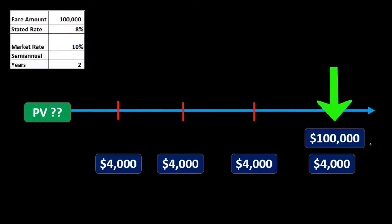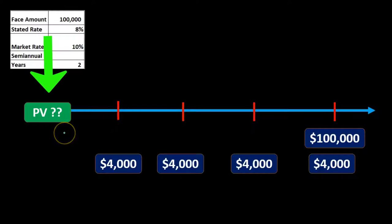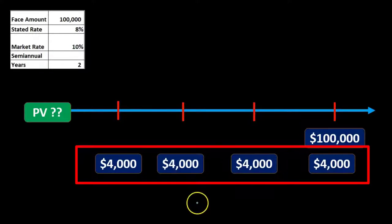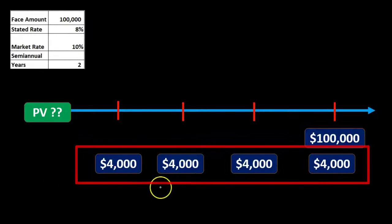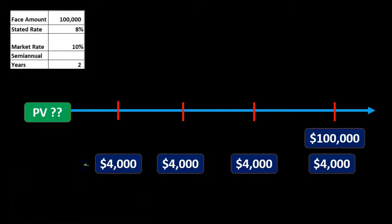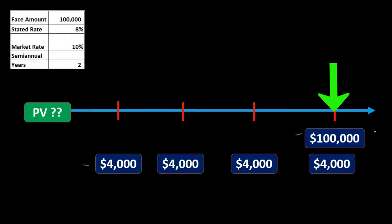The bond will have one cash flow of $100,000 at the end of four periods or two years, and we need to figure out the present value to price it back at time period zero. Then we have four annuity payments of $4,000. We could present value each payment individually, but the easier approach is to present value the annuity portion separately and the single lump-sum amount separately.